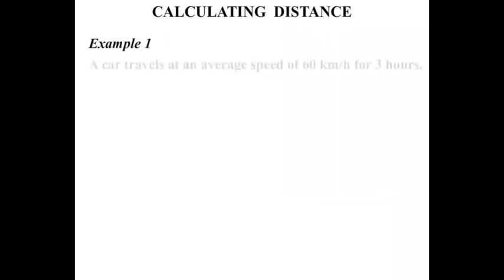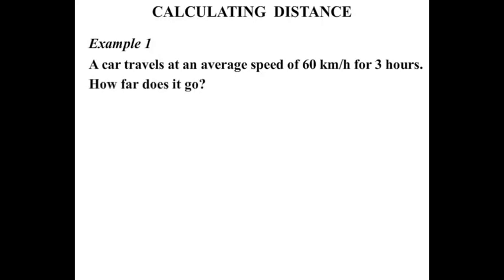Example 1. A car travels at an average speed of 60 km per hour for 3 hours. How far does it go? Well let's write down some information. The Speed is 60 km per hour, and the Time is 3 hours.